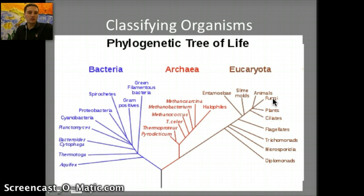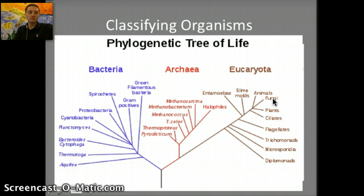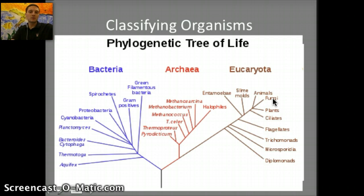Phylogeny is the evolutionary history of a species or a group of species. When we're talking about systematics, we're talking about the classification of organisms and determining evolutionary relationships between those different organisms. Again, those can become more specific with new technology, specifically the ability to sequence DNA and analyze the DNA differences between different species.